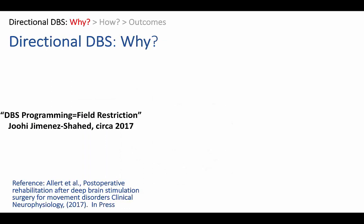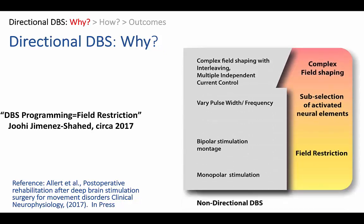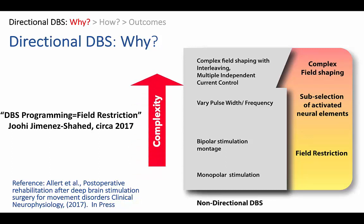To answer the question of why directional DBS a bit better, we have to understand that DBS programming is effectively field restriction. What we do when we program a DBS lead is that we try and spread electric current into the bits of the brain that we would like it to spread to for therapeutic benefit, and we keep it from spreading to the bits of the brain that produce side effects. We tend to do this in a fairly standardised fashion, maybe some small variations from centre to centre, but overall we tend to follow a pattern based on increasing complexity.